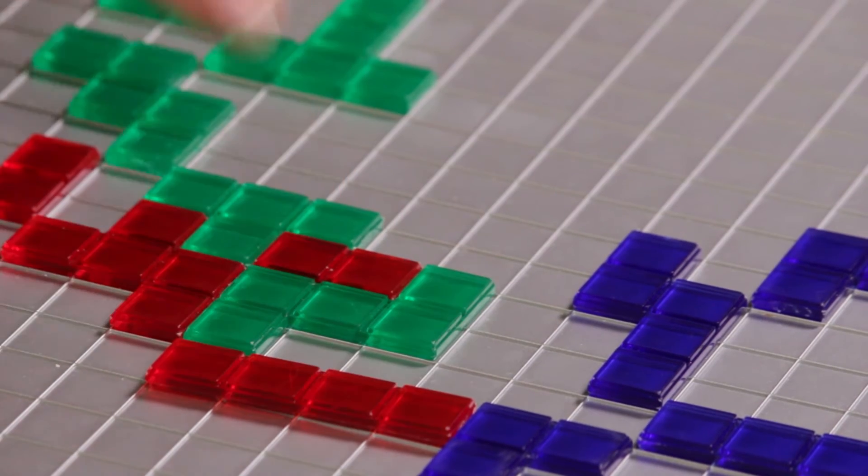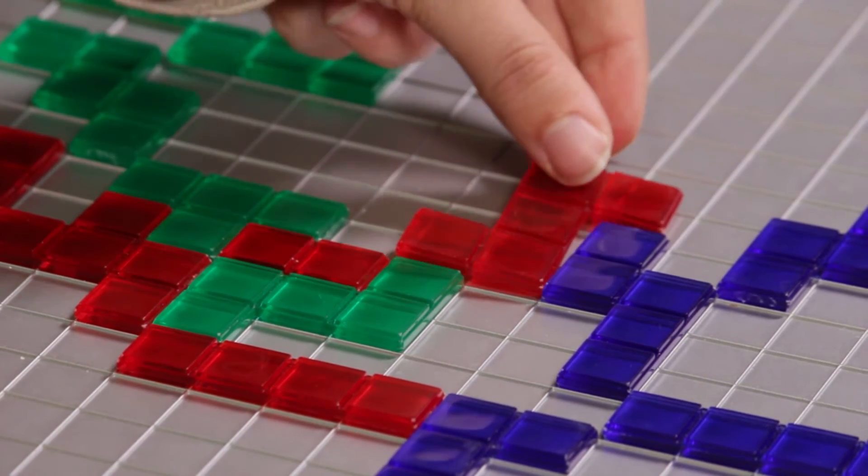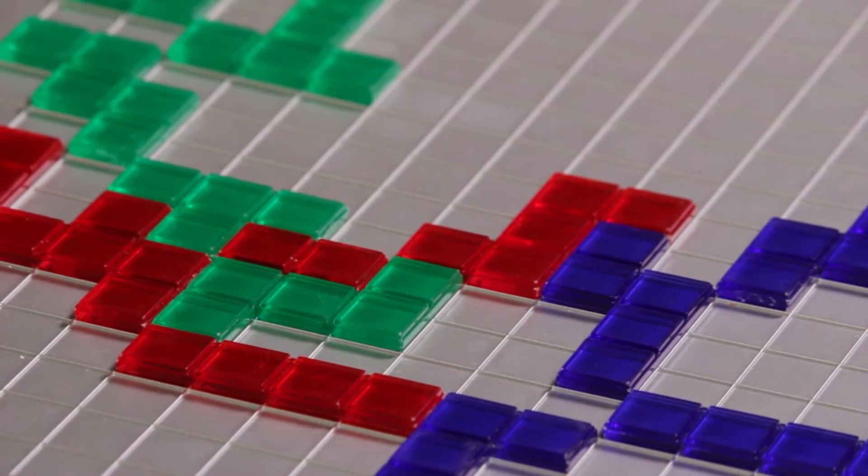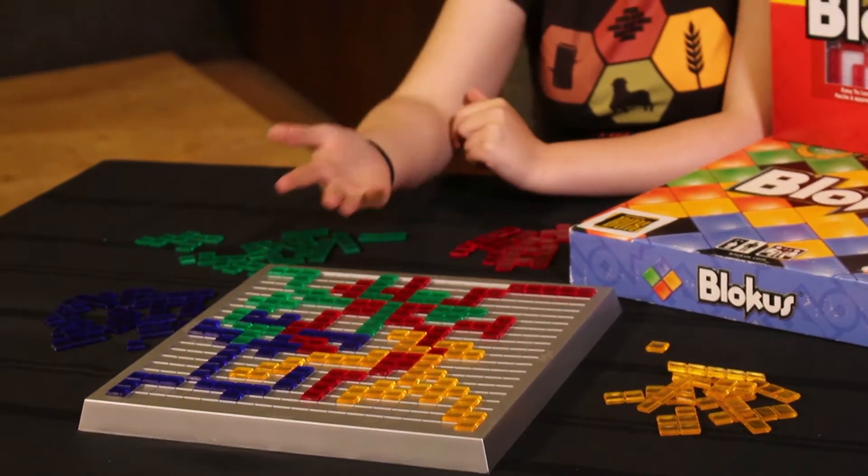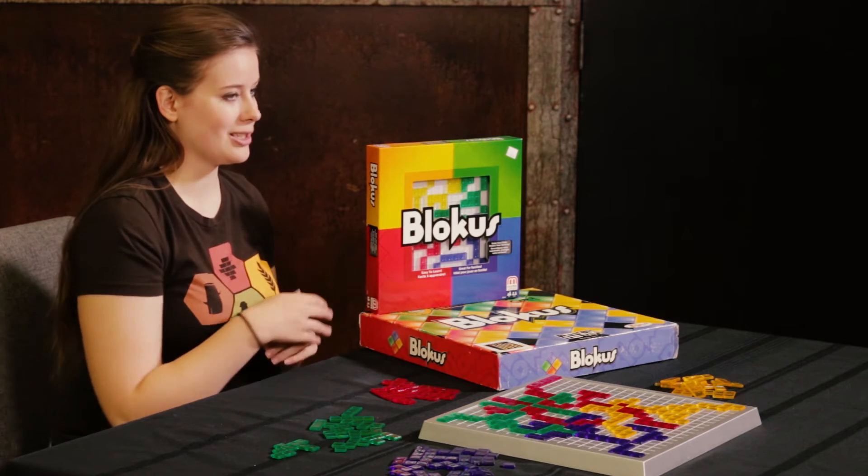So for example I could place this piece like this because the corner is touching, and on and on. You'll be interacting with other players, as you can see, some people might block you off and you can't get into any other sections, hence the name Blokus.